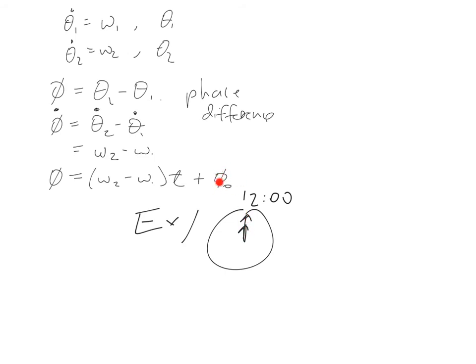Our initial condition is phi naught is 0 at time 0, and we want to figure out the next time that phi maps to 0. The hour hand takes 12 hours to go through 2 pi.